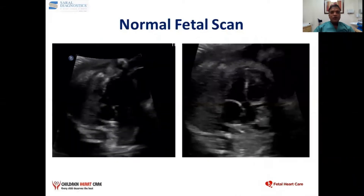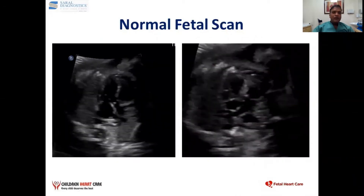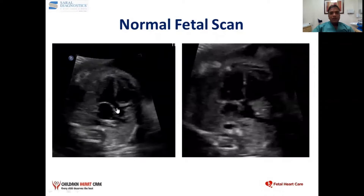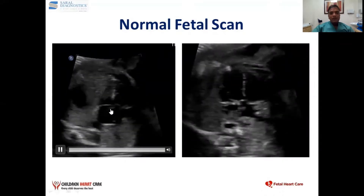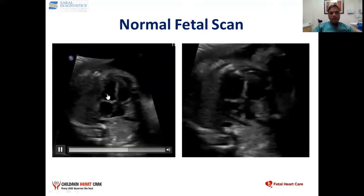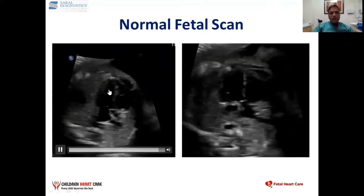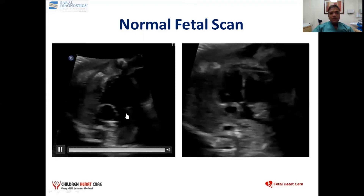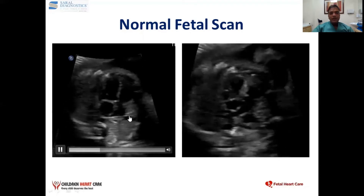First I will describe a normal fetal scan. Normally there are four chambers: the left atrium, the left ventricle, right ventricle, and somewhere here is the right atrium.